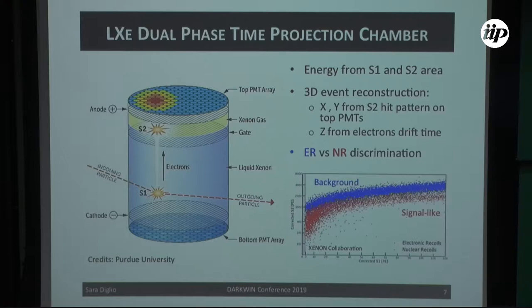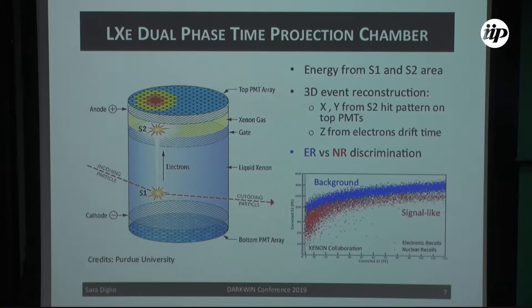We use the ratio between the S1 and S2 signals to distinguish between electronic and nuclear recoils. Compared to argon we are less powerful at this discrimination, but we are still capable of making the distinction, as demonstrated using calibration data with neutrons and background-like particles. With the dual-phase TPC we can also measure the 3D position of an interaction: the photomultipliers provide X and Y position, and the time between S1 and S2 gives the Z position.